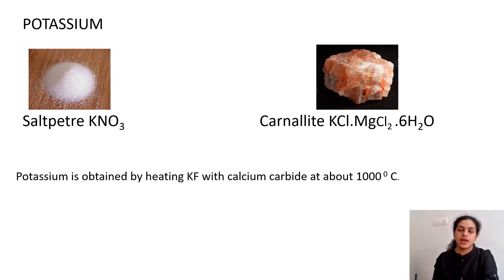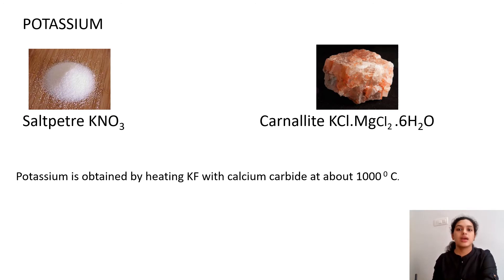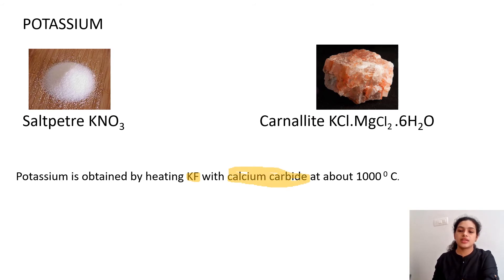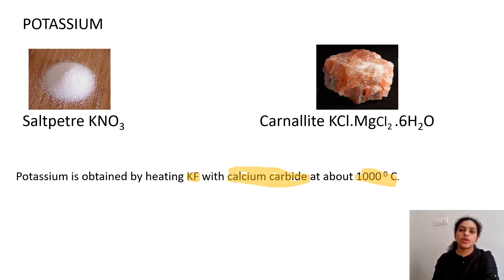For potassium, the main minerals are saltpeter and carnallite (KCl·MgCO₂·6H₂O). However, potassium is normally not extracted from these minerals. Instead, it is obtained by heating potassium fluoride with calcium carbide at an elevated temperature of 1000°C to get potassium metal.